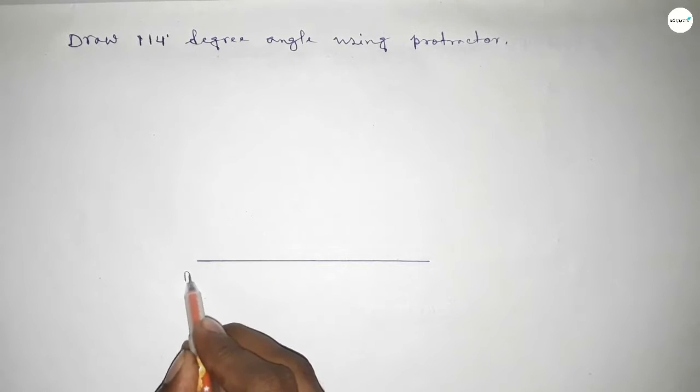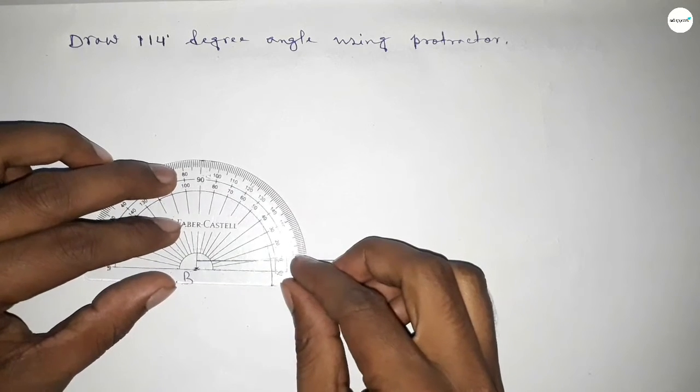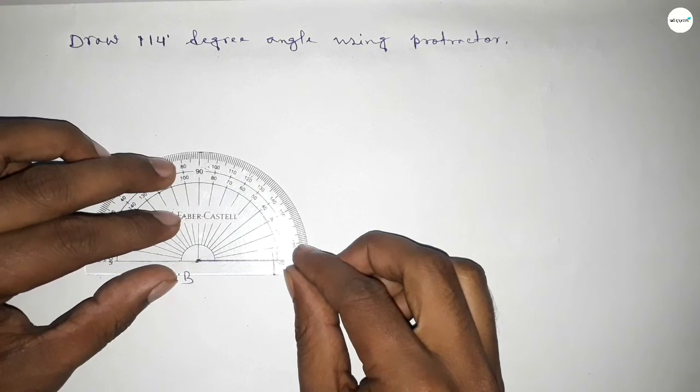Next, we take point B here and point C here. Now, putting the protractor on point B perfectly, then counting the angles.